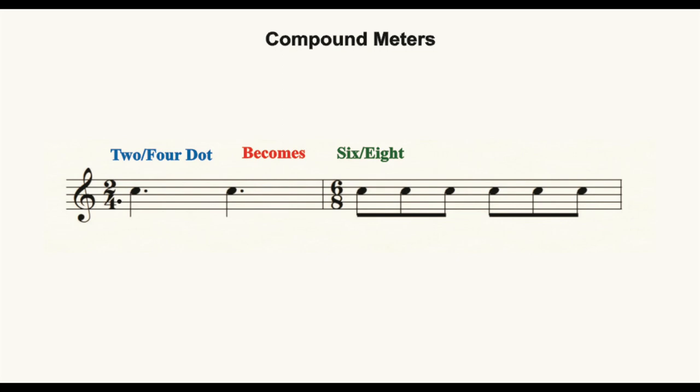2/4-dot becomes 6/8 and it is left to the performer to do the math in finding the true number of beats per measure and the actual value of each beat. The math will always consist of dividing the top number of the compound time signature by 3 to find the number of beats per measure and combining the bottom number in a set of 3 to find the value of the dotted note representing each beat.